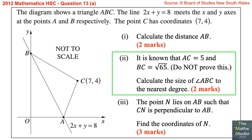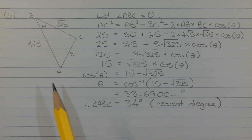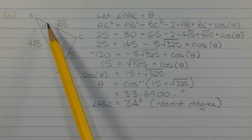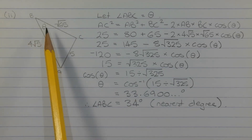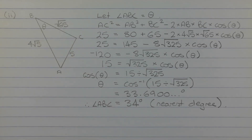Part 2. It is known that AC equals 5 and BC equals the square root of 65. Do not prove this. Calculate the size of angle ABC to the nearest degree. Triangle ABC is a non-right angle triangle and we have three known sides. The question is asking for the size of angle ABC, which I've marked here with angle theta, correct to the nearest degree.